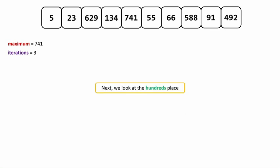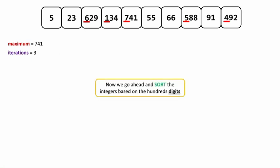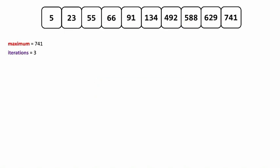For this last iteration, we look at the hundreds place. Only five of these numbers actually have a digit in the hundreds place, which means the rest of them are going to be counted as having a zero in their digit place. When we go to sort based on the hundreds digit, we'll finally get our fully sorted array. Congratulations — you just went through a radix sort.